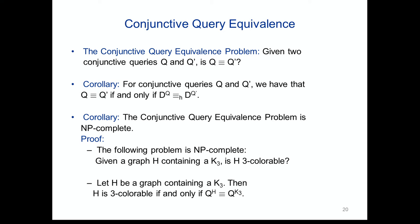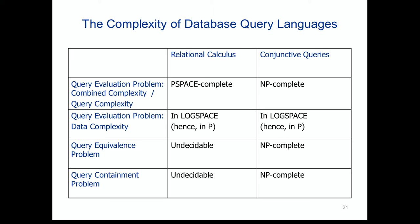This shows an interesting trade-off: at the level of full first-order logic, we have great expressive power but hit undecidability at query equivalence and containment, and PSPACE-completeness for combined and query complexity of evaluation. If we set horizons lower and work with conjunctive queries, all three problems — evaluation, equivalence, and containment — become NP-complete. That is the trade-off between giving up expressive power but gaining better computational behavior.